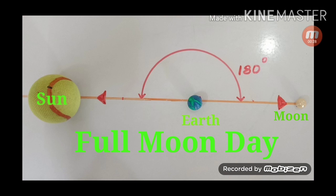However, sometimes on a new moon day or full moon day, the three fall in one line and are in the same plane. Eclipses occur on such occasions. Eclipses may be solar or lunar.